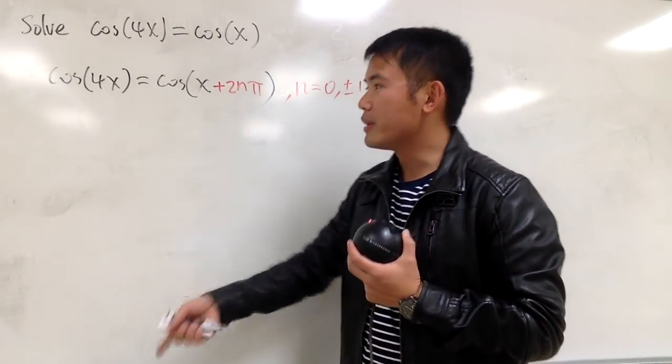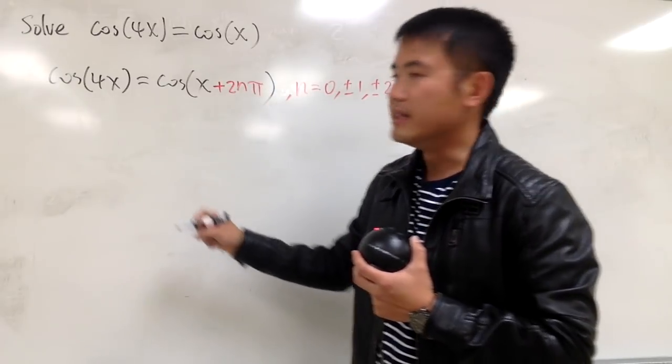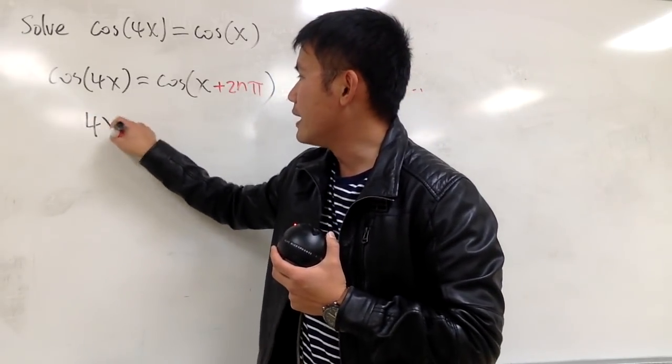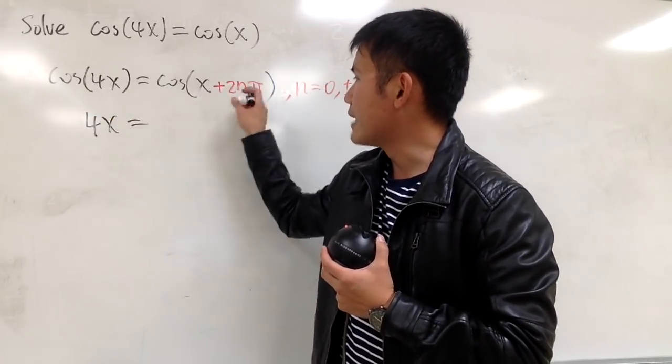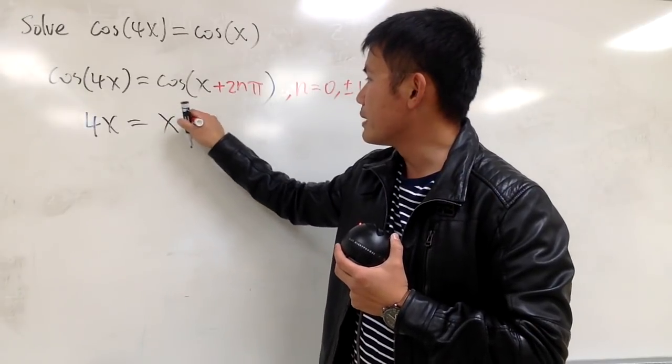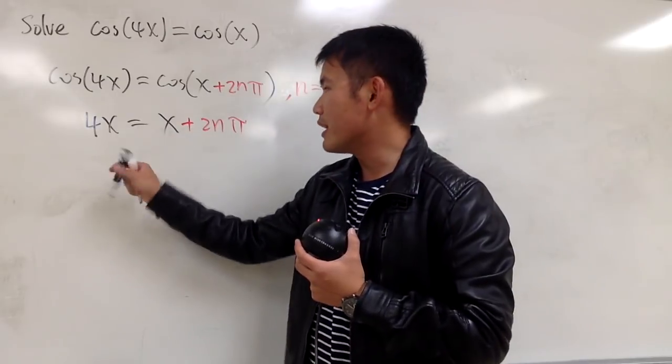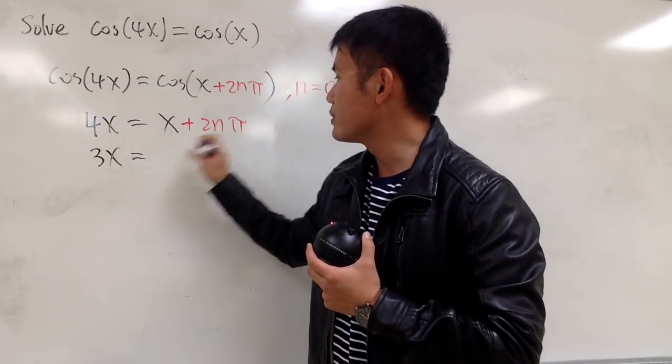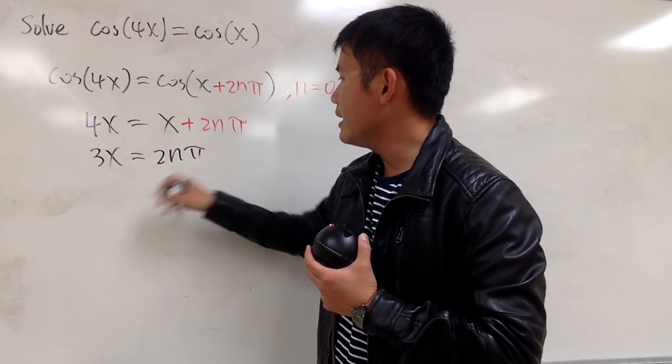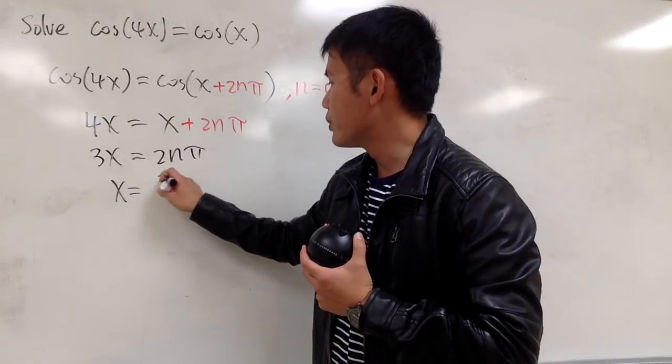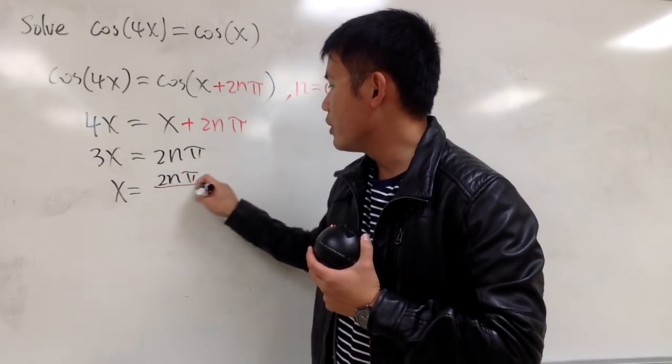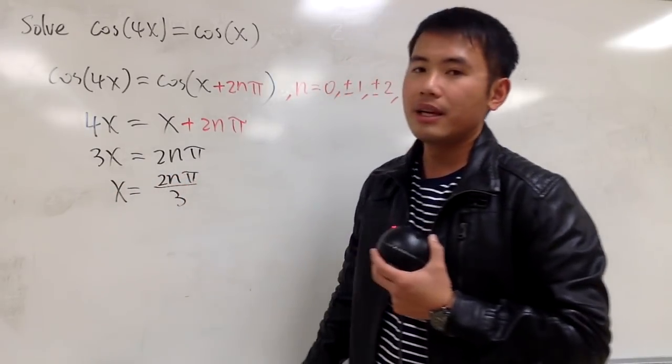So this is pretty much the deal. Once you include this part, you can legitimately cancel the cosine and say we have 4x equals, just the inside now, x plus 2nπ. And now we can subtract the x on both sides. 3x equals 2nπ, divide both sides by 3, x equals 2nπ over 3, just like this.